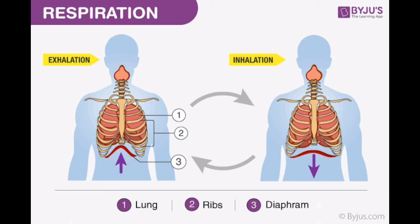During breathing out, or exhalation, the chest moves downward and the diaphragm moves upward. Air pressure in the lungs increases and the lungs contract. As a result, carbon-dioxide-rich air filled in the lungs goes out through the nostrils. This process is called exhalation, and together inhalation and exhalation are called breathing.